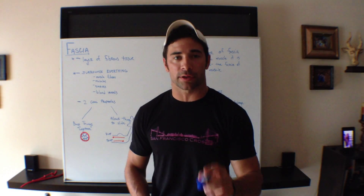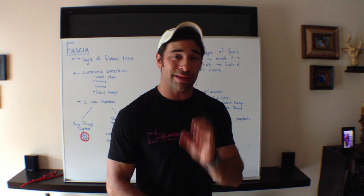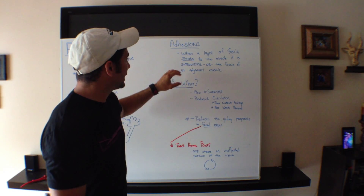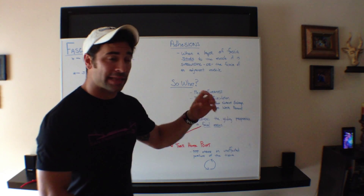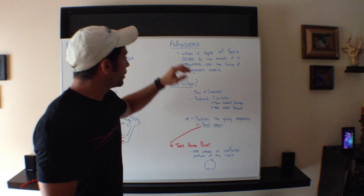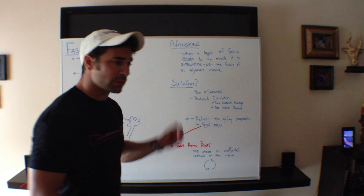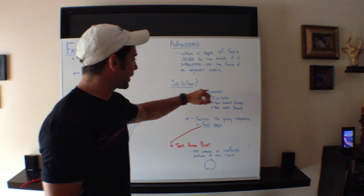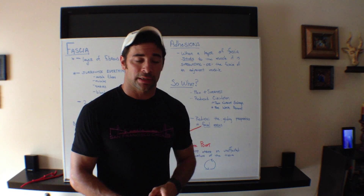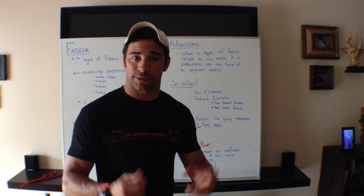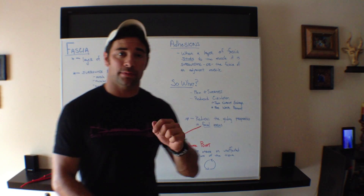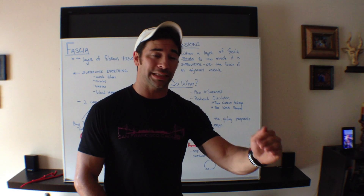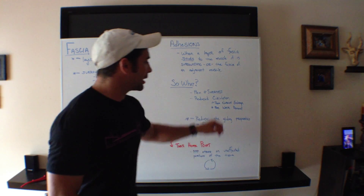Now let's relate this to the CrossFit or athletic community. Now that we know what fascia is, we can understand what adhesions are. Adhesions are when a layer of fascia sticks to the muscle it's surrounding, or to the connective tissue of the adjacent muscle. This can cause irritation, which causes pain and soreness. It also causes reduced circulation — and since everything in the body comes through circulation, through blood, we get decreased nutrient exchange and poor waste removal.